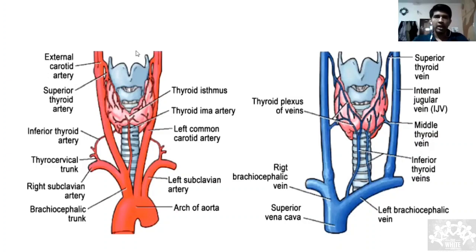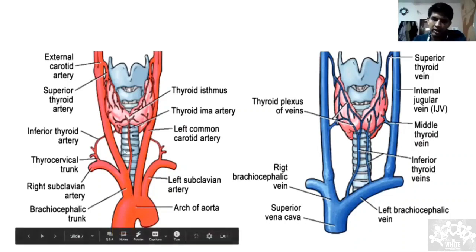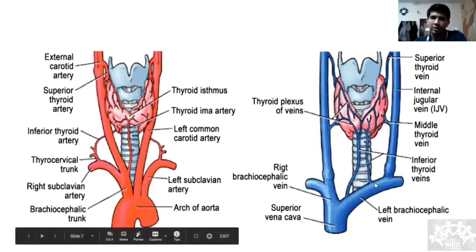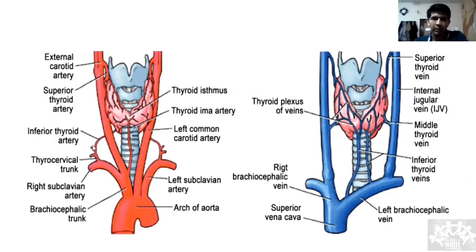Coming to blood supply: the superior thyroid artery is a branch of the external carotid artery. The inferior thyroid artery is a branch of the thyrocervical trunk. Very rarely, in about 5% of patients, there is a thyroid ima artery arising directly from the arch of the aorta. Venous drainage: the superior and middle thyroid veins drain into the internal jugular vein; the inferior thyroid vein drains into the left brachiocephalic vein.